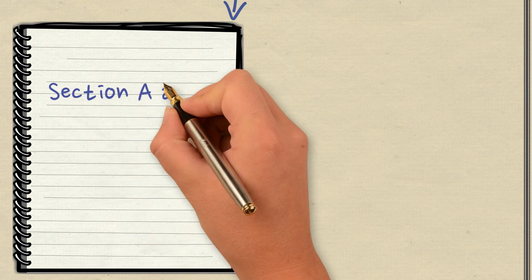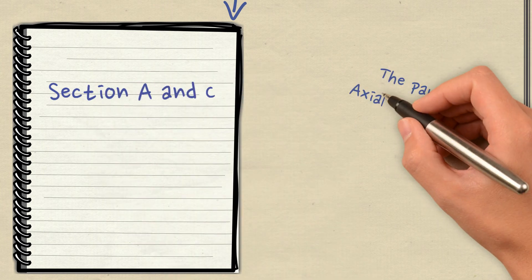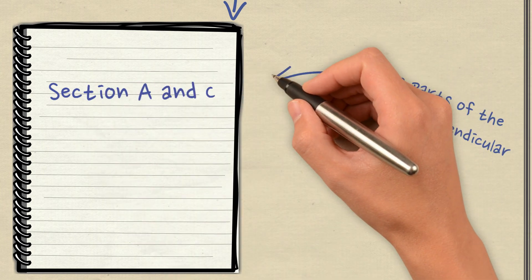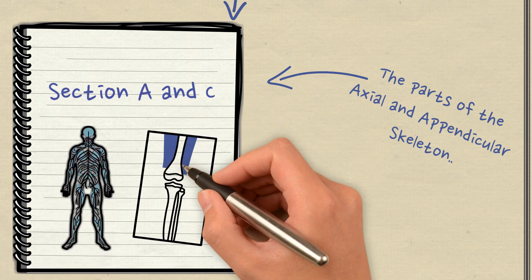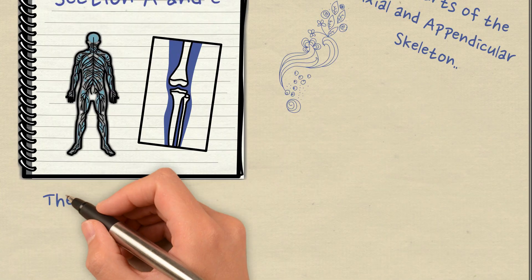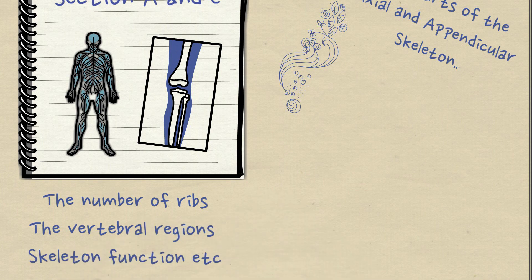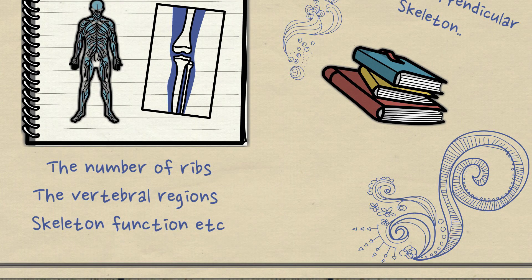They could appear on your exam in section A or in section C, for example the parts of the axial and the appendicular skeleton. Don't forget as well that you also have to focus on the joints. We already covered that, but you should know the number of ribs, the names of the ribs, the vertebral regions and skeleton function.